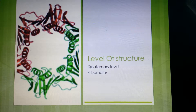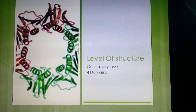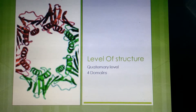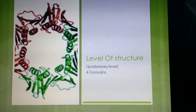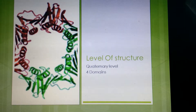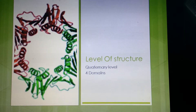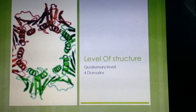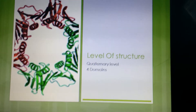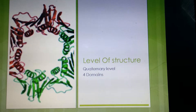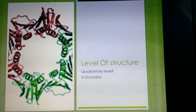The final structure of DNA polymerase is the quaternary level. In the figure, you'll notice that there are four domains — two red domains and two green domains. DNA polymerase is composed of more than one polypeptide chain, and there are usually four subunits. When DNA polymerase synthesizes DNA, the enzyme itself will form into a dimer.